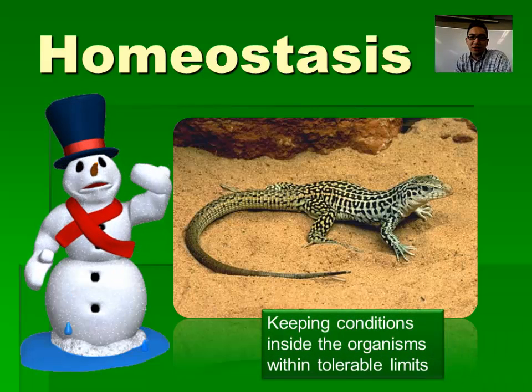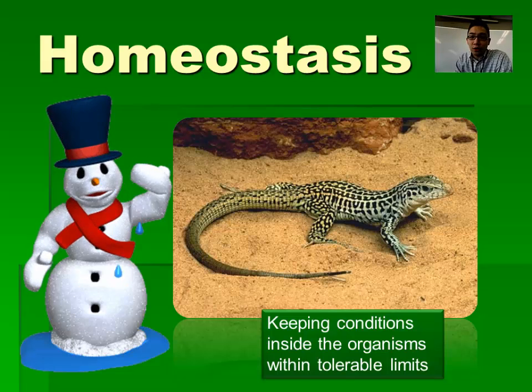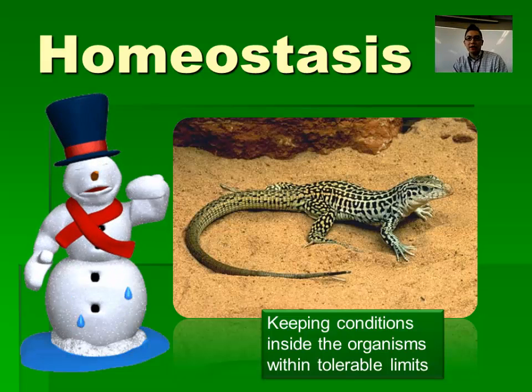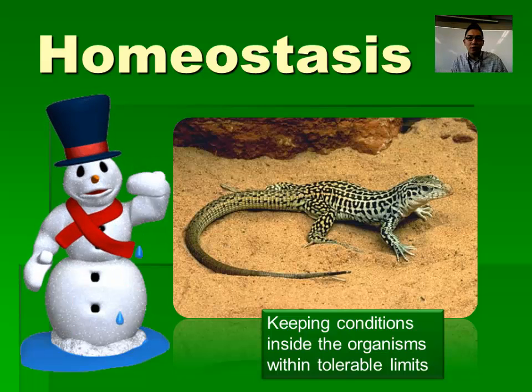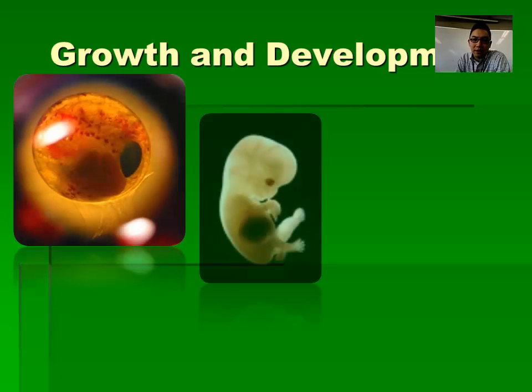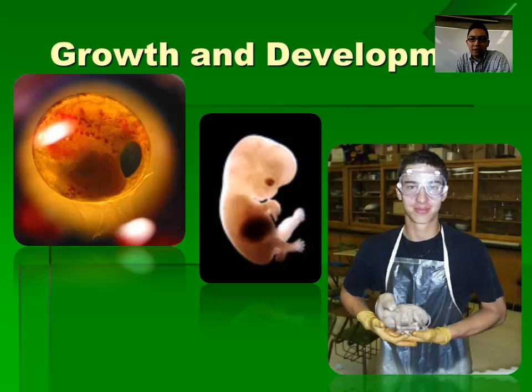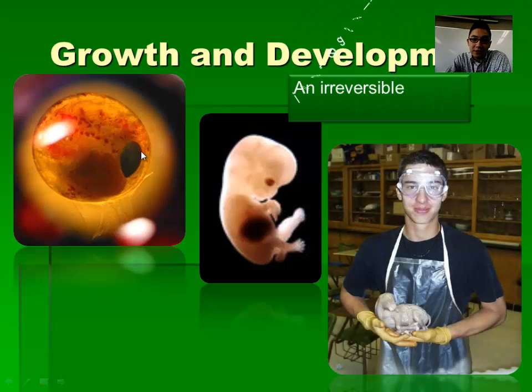Homeostasis means showing some kind of balance — for us that's temperature regulation, blood glucose regulation, keeping things within normal limits. Even cold-blooded animals regulate by moving from shade to sun. Living things also have to grow and develop — an irreversible increase in size. That's pretty easy to understand and you can give plenty of examples.